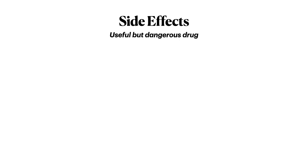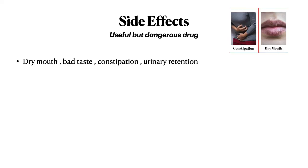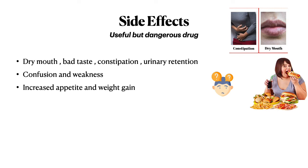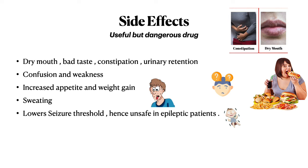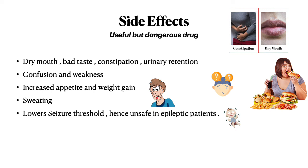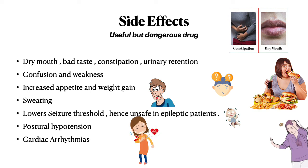Now coming to the side effects of amitriptyline. Amitriptyline is a useful but dangerous drug. The common side effects include dry mouth, bad taste, constipation, and urinary retention. It can also cause confusion and weakness. It can also lead to increased appetite, which may cause weight gain, and it can also cause sweating. It lowers the seizure threshold, hence it is unsafe in epileptic patients, especially in children. It can also cause postural hypotension, which is basically manifested when a patient suddenly stands while sleeping. And it can also lead to cardiac arrhythmias.